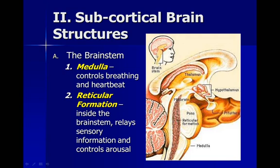The brainstem is the first structure we'll talk about, and it is vital for our functioning. As most of you know, the brainstem is what keeps us alive. The medulla, sometimes called the medulla oblongata, is a section at the very base of the brainstem that controls our breathing and heartbeat. Anything that affects the medulla will have serious consequences. Later, when we talk about painkillers, we'll see that they actually have an effect on the medulla.